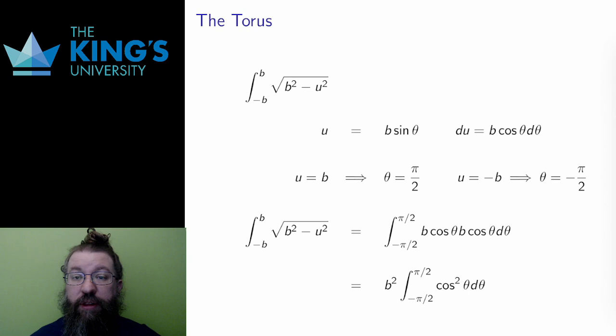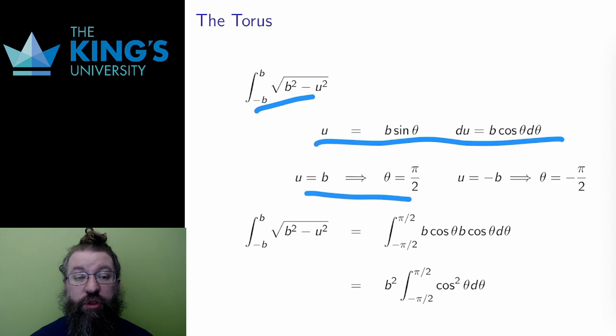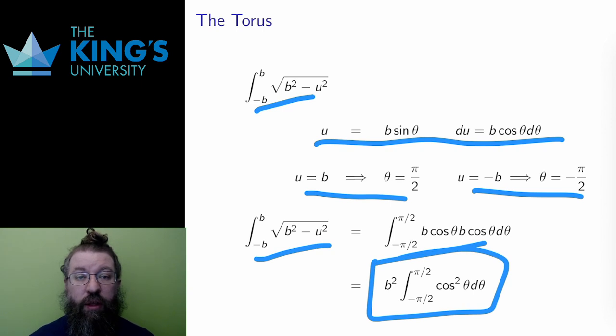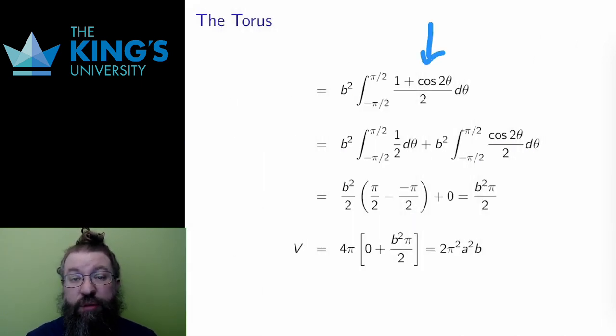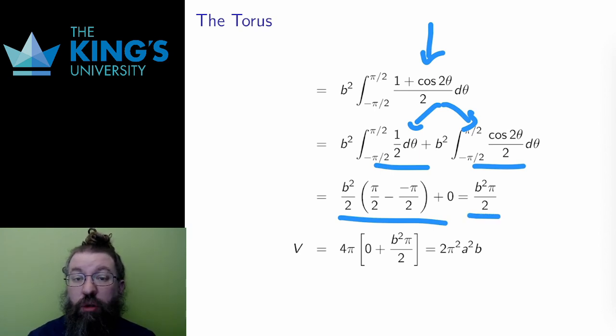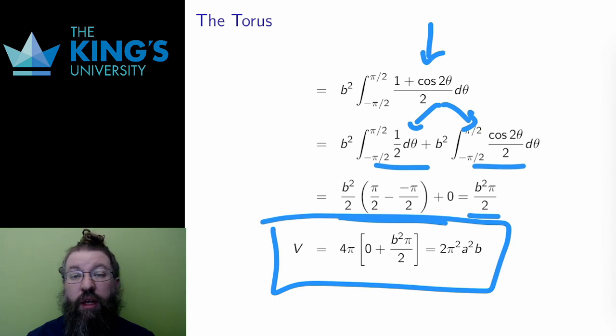Here is the second integral. This integral is a trig substitution, u = b sin θ. I've shown all the steps of the trig substitution on the slide here. The trig substitution turns into cos² θ. Then, to solve the integral of cos² θ, I use a half-angle identity to split it up into two integrals, both of which are pretty straightforward. I find the antiderivatives and evaluate them on the bounds. And the result of the calculation is that the volume of the torus with large radius a and small radius b is 2π²ab.